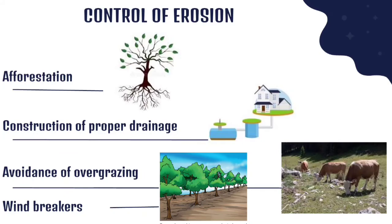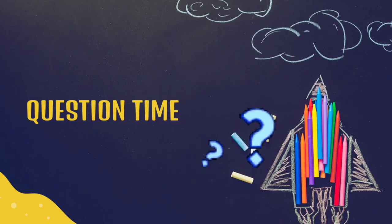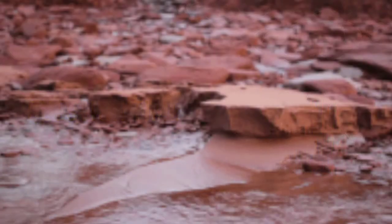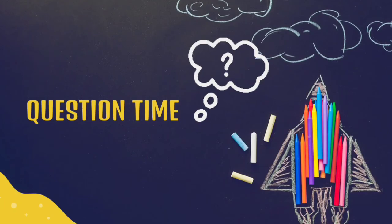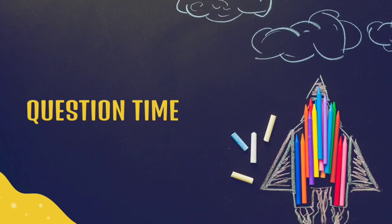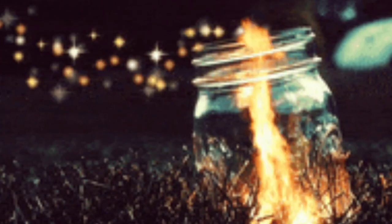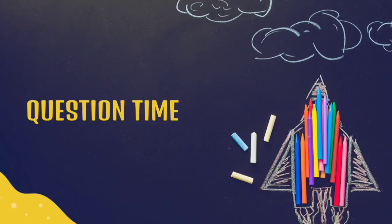Okay, hope you are following. Now it's question time. Can you remember what we have learned? Can you define erosion? I want you to try. Beautiful. Erosion is the washing away of the top layer of the soil. One of the causes of erosion is what? I'm listening to you. Okay, beautiful. Is bush burning. Another cause is what? Human activities. Another cause is water, wind.